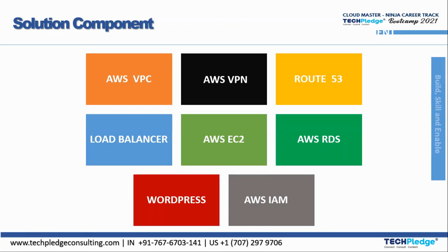Welcome back. After the proposed solution, we are going to see the solution components. Whatever was proposed — TechPlace has proposed the solutions — we will now look at what its components are going to be. As we know, it has proposed AWS Cloud. So what services does AWS hold, and what are the solution components? Here we can see AWS VPC, Virtual Private Cloud, Virtual Private Network.